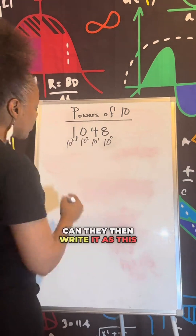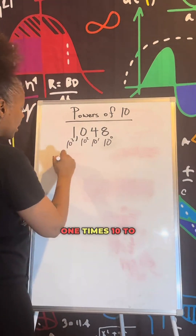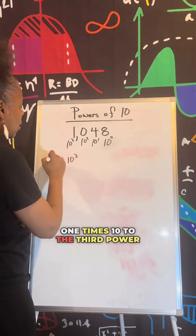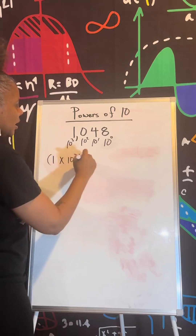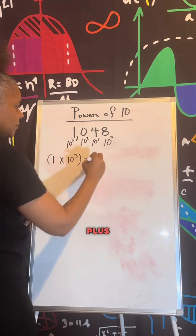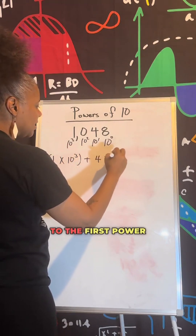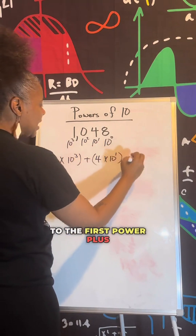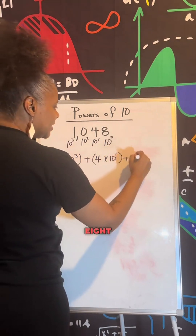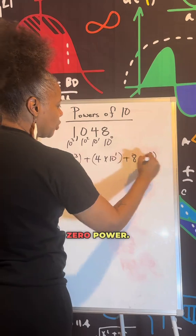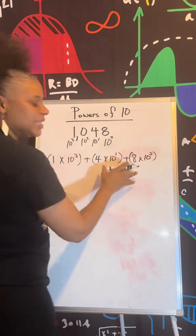Can they then write it as this? 1 times 10 to the 3rd power, plus 4 times 10 to the 1st power, plus 8 times 10 to the 0 power.